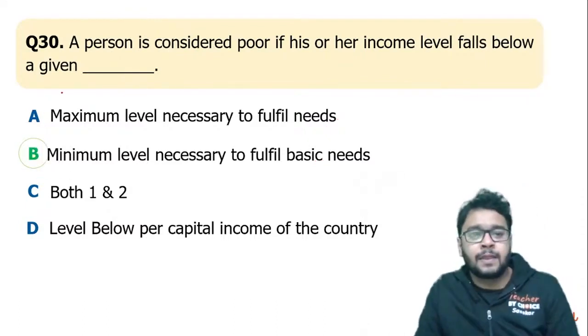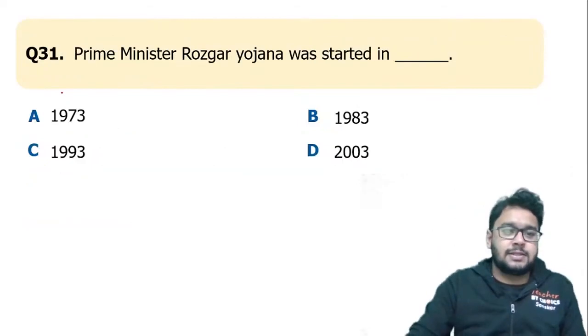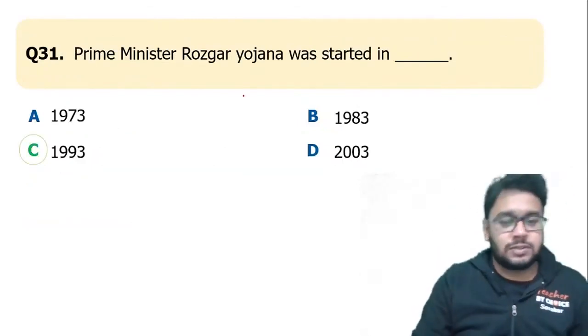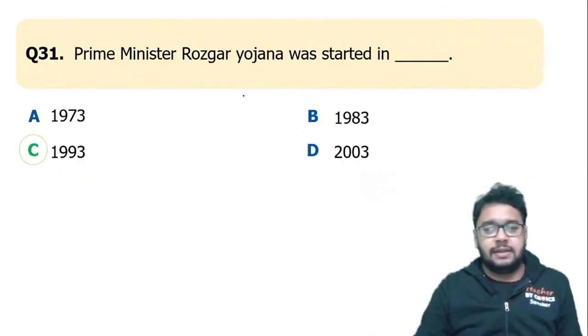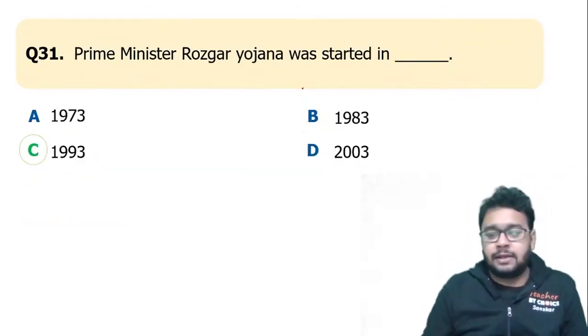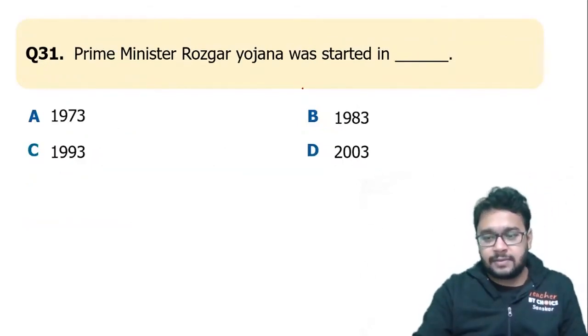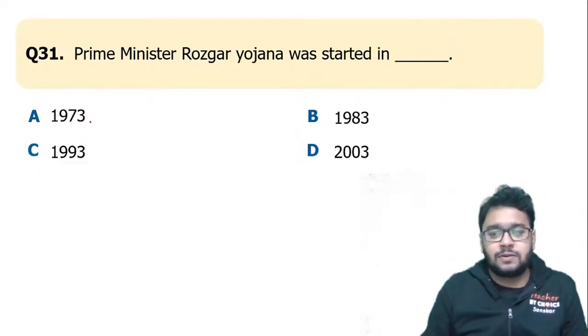Prime Minister Rozgar Yojana — it's very easy. It was started in 1993, option C.